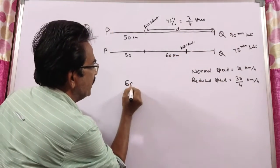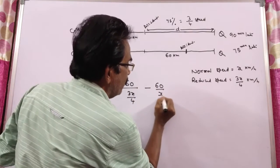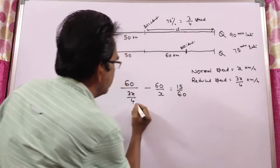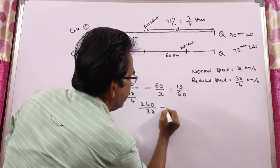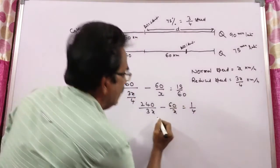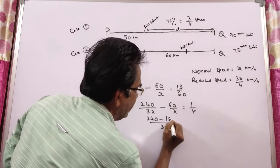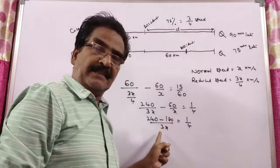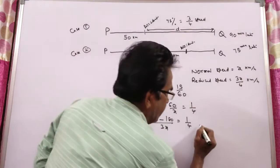That is, 60 kilometers with reduced speed minus 60 kilometers with normal speed equals 15/60 hours. So 60 divided by (3X/4) minus 60/X equals 1/4. That gives 240/3X minus 60/X equals 1/4. Taking LCM as 3X: 240 minus 180 divided by 3X equals 1/4, giving 60 by 3 means 20, and 20 into 4 gives X equal to 80 kmph.